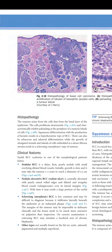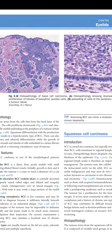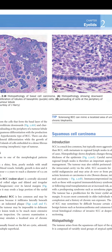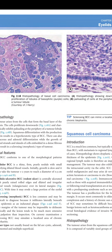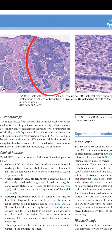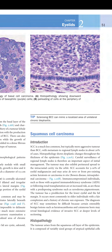Histopathology: the tumor arises from cells that form the basal layer of the epidermis. The cells proliferate downward and characteristically exhibit palisading at the periphery of the tumor lobule. Histopathology shows downward proliferation of lobules of basophilic cells, and palisading of cells at the periphery of the tumor lobule.